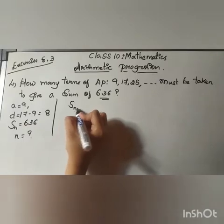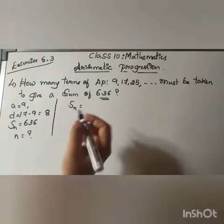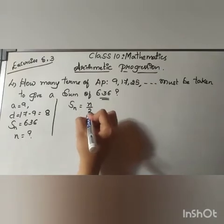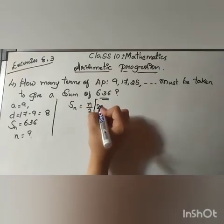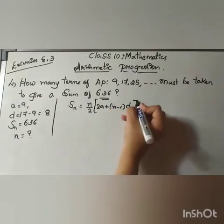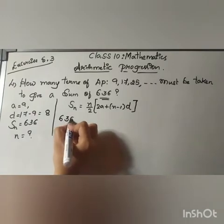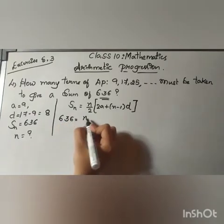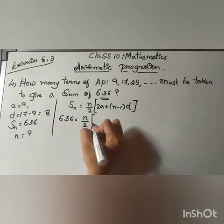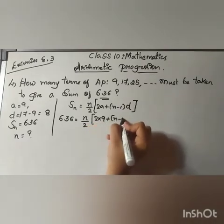Sn equals n by 2 into 2a plus (n minus 1) into d. Since Sn is given, that is 636, equals to, we have to find out n. n by 2 into 2 into 9 plus (n minus 1) as it is, into d is 8.